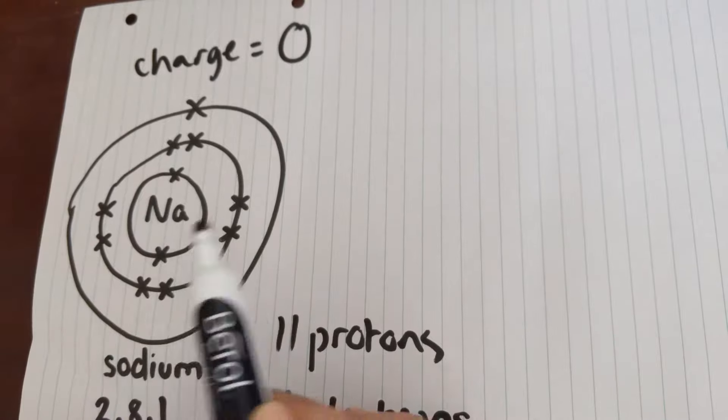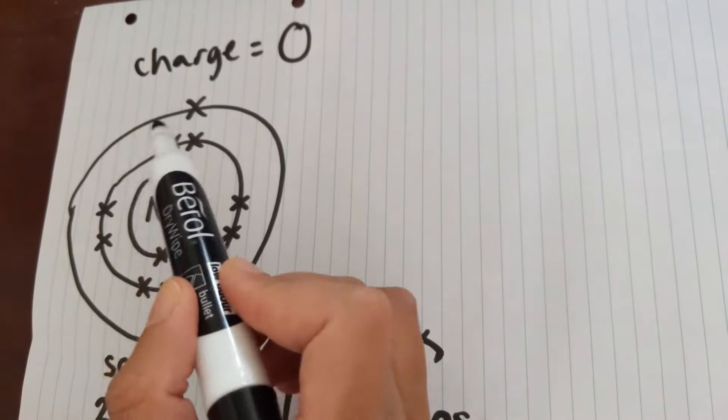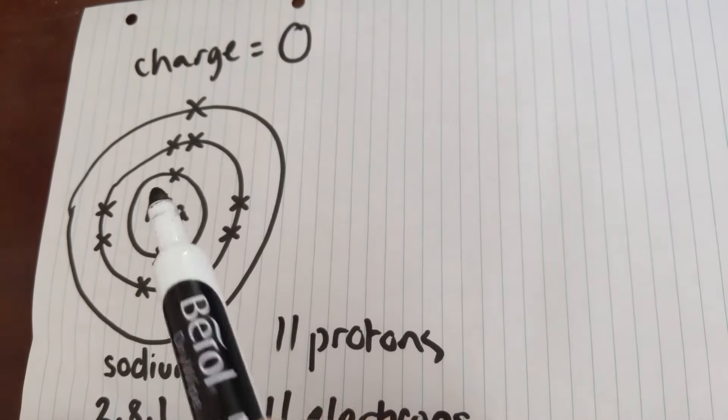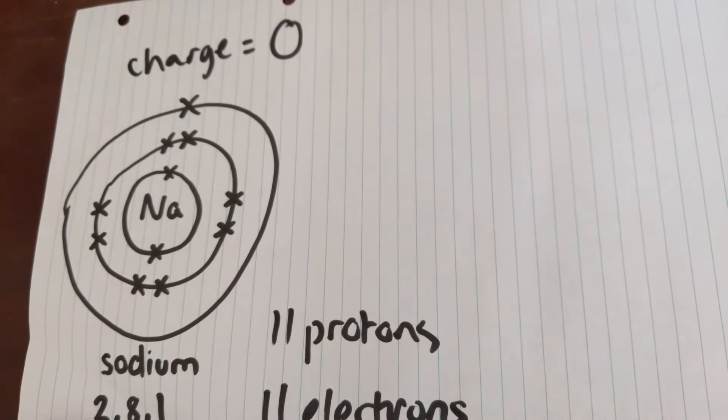But as an atom, it's not very stable because this outer shell electron is free to kind of go and interact anywhere it fancies. And in sodium particularly, a particularly common substance is sodium chloride, which is our common table salt.